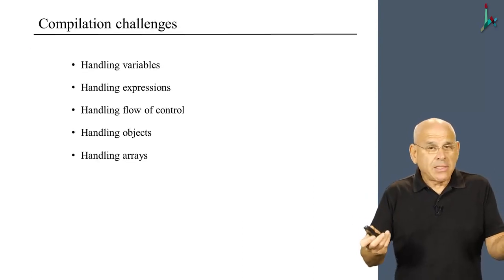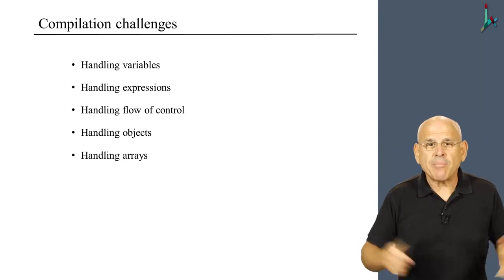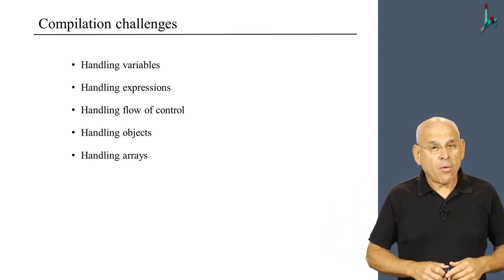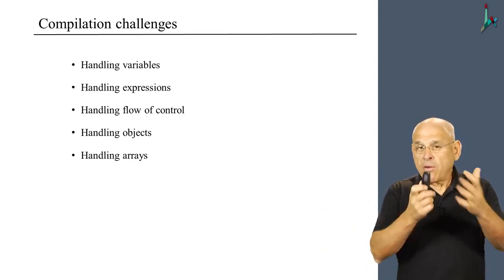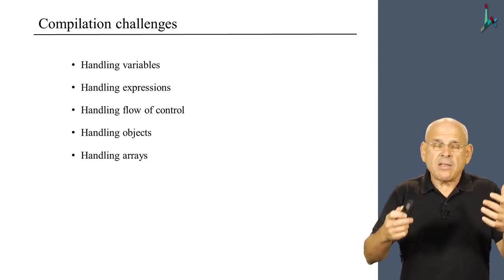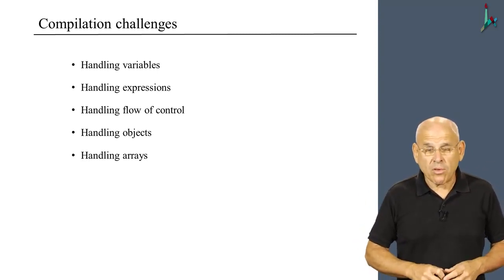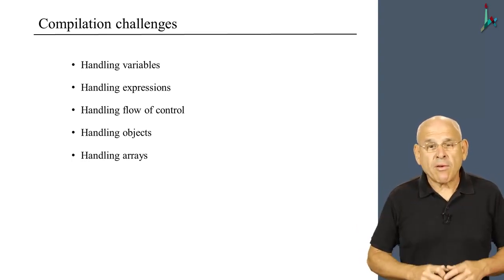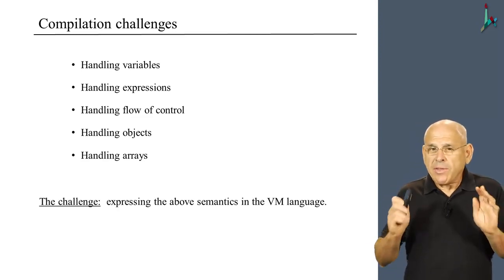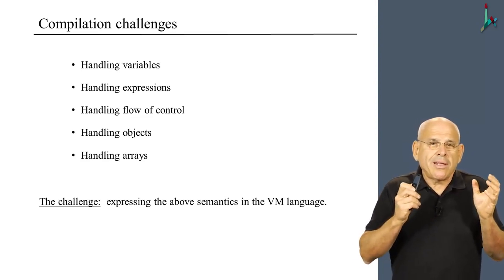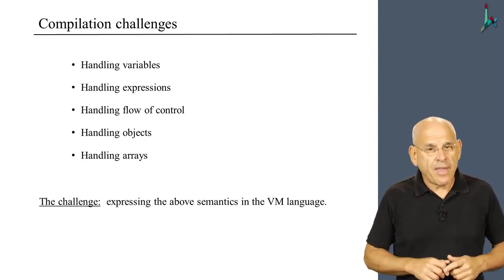All right, now what do you see when you compile a subroutine? You see variables, expressions, if, while, statements like those. You can see objects, and obviously you can see arrays. So the compilation challenges that we're going to handle are what you see here on the screen. And these challenges are also the table of contents of the next units in this module. In every unit, we'll deal with one of these challenges one at a time. Now, the challenge is to generate VM code that captures the semantics of variables, expressions, and so on using VM commands.